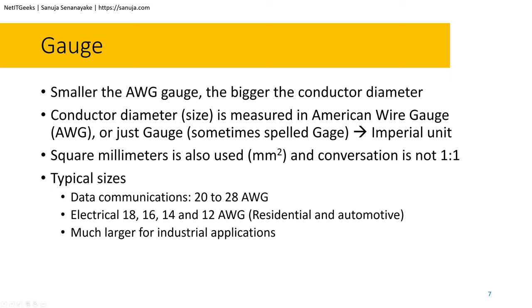AWG is used globally, though square millimeters (mm²) are also in use, and the conversion between AWG and mm² is not always one-to-one. For data communication, typical sizes range from gauge 20 to gauge 28 — gauge 20 has a bigger diameter conductor, gauge 28 has a smaller diameter. For electrical applications, we use gauge 18, 16, 14, and 12 for both residential and automotive.